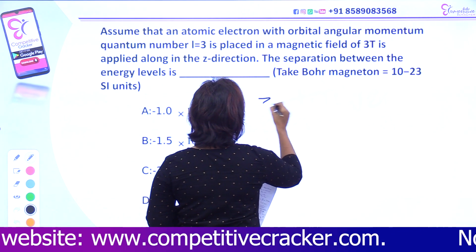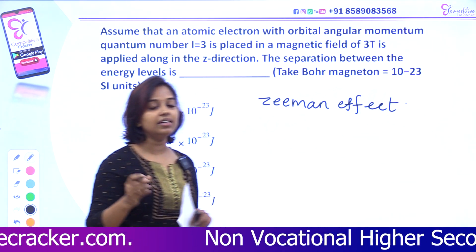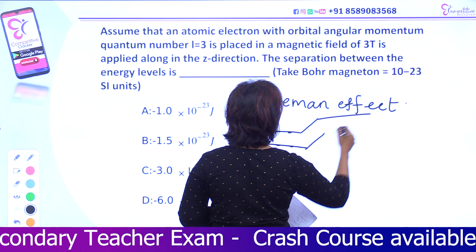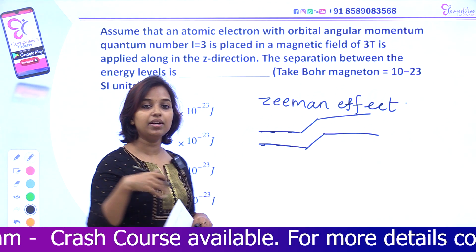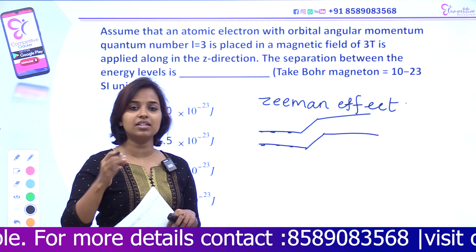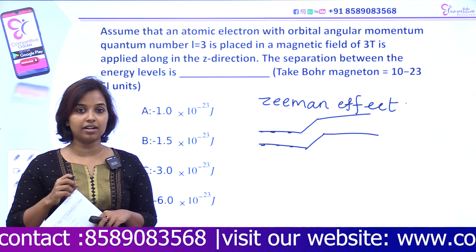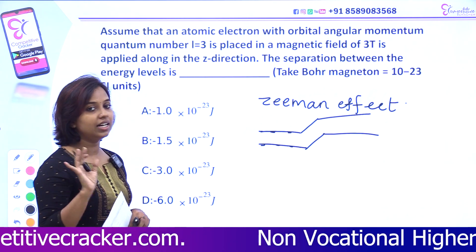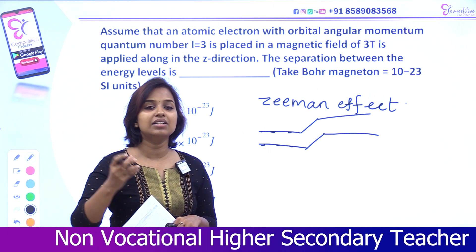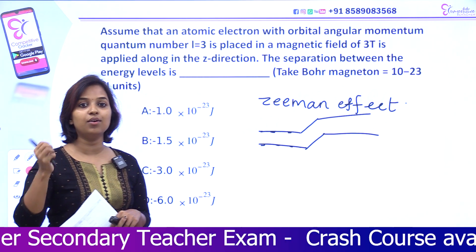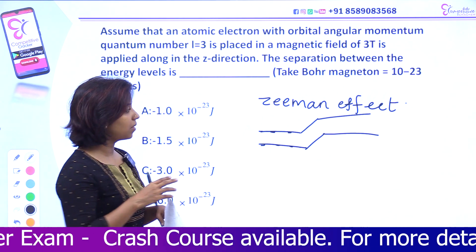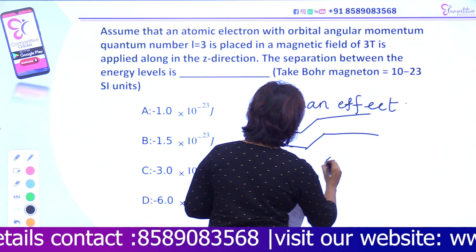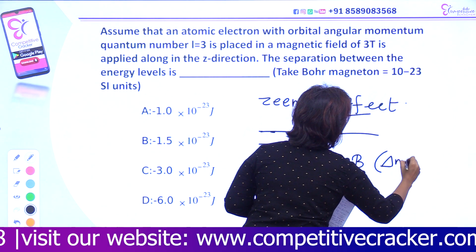Zeeman effect — we have to discuss the problem. Here we have to discuss the energy separation. The Zeeman shift in terms of energy — we will find out what you need to do. In this problem, we have to discuss the energy level. In terms of energy, the energy is equal to mu_B times B times delta m_l.